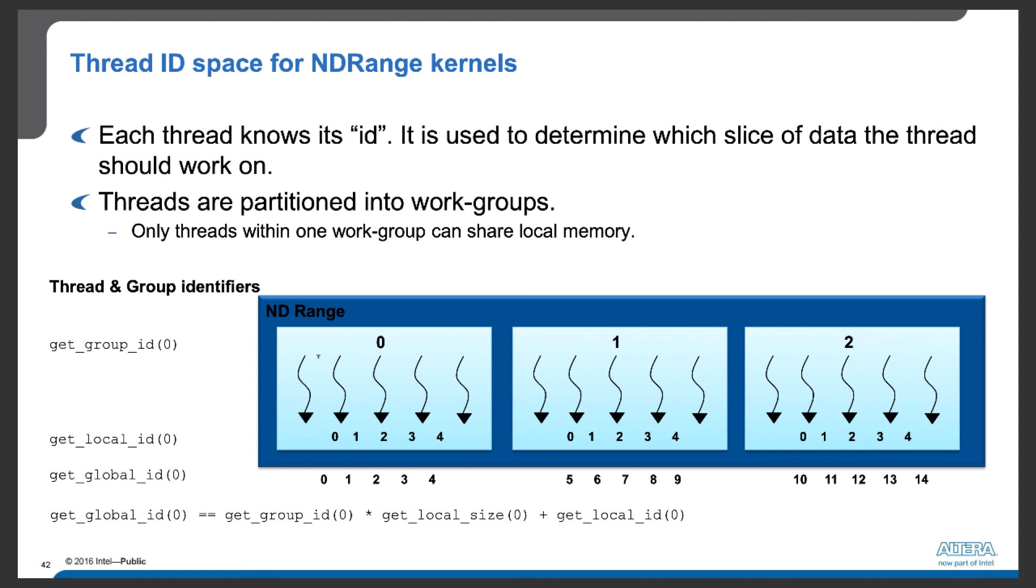As we illustrated here, we have 15 threads. And five of them are grouped in a bundle. The first five threads are grouped into work-group 0. And these five threads can share local memory.